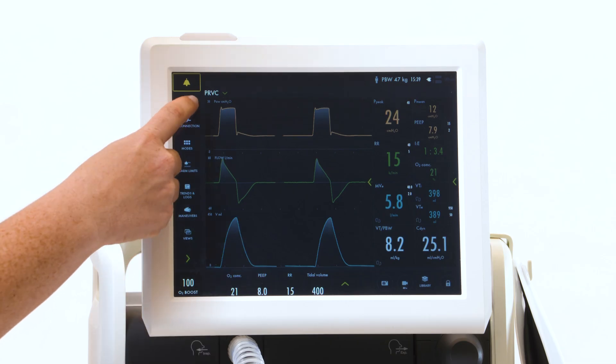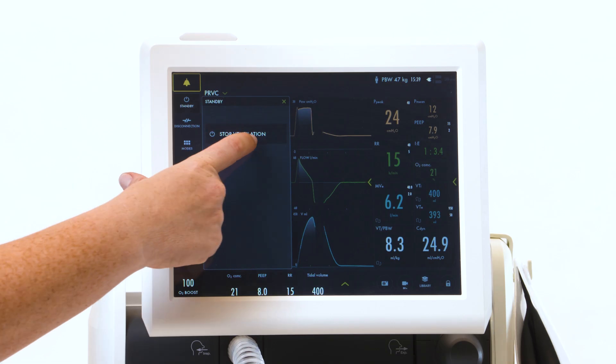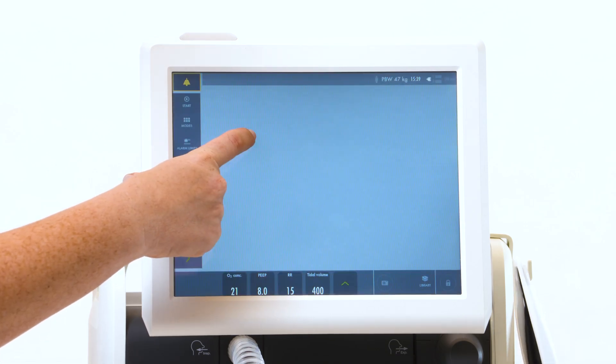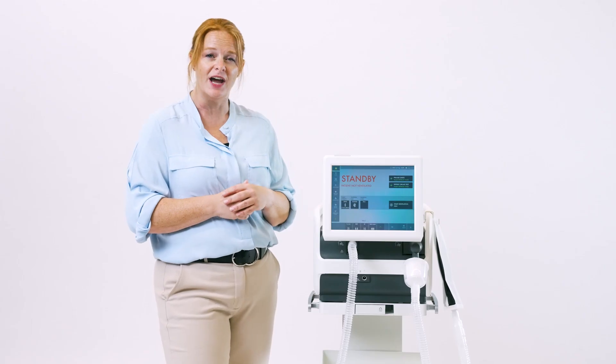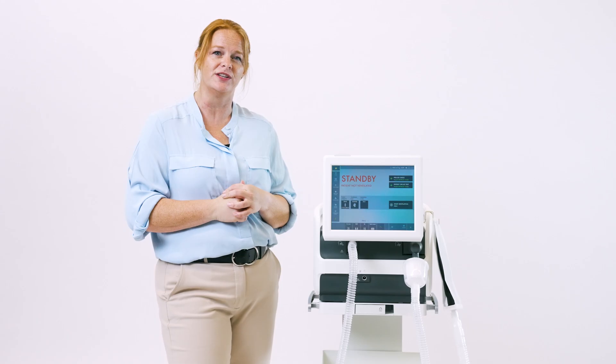To stop ventilation and go into Standby, touch Standby, and then touch and hold Stop Ventilation until the blue bar goes across. Now you can switch into Non-Invasive Ventilation if you would like.